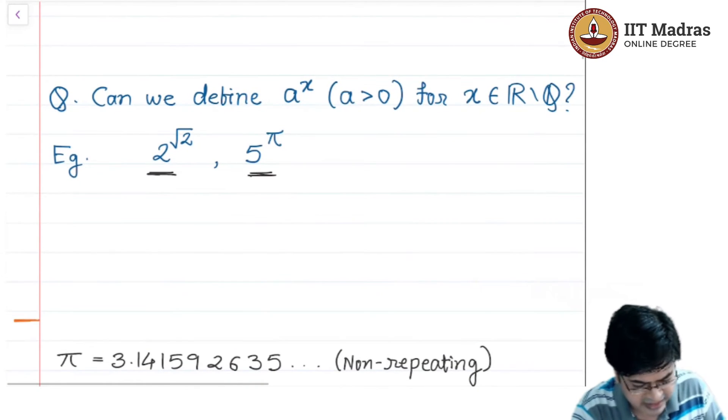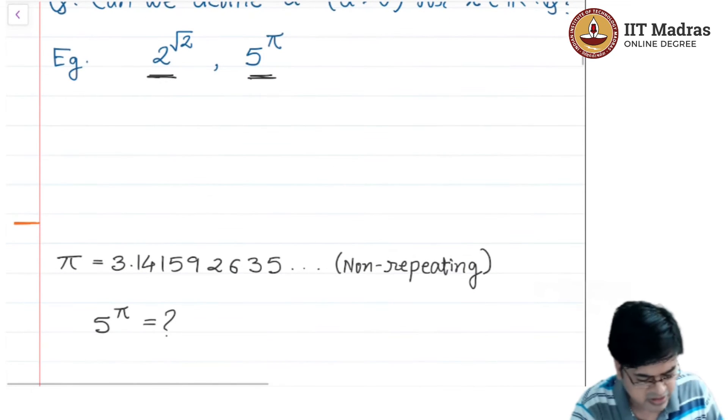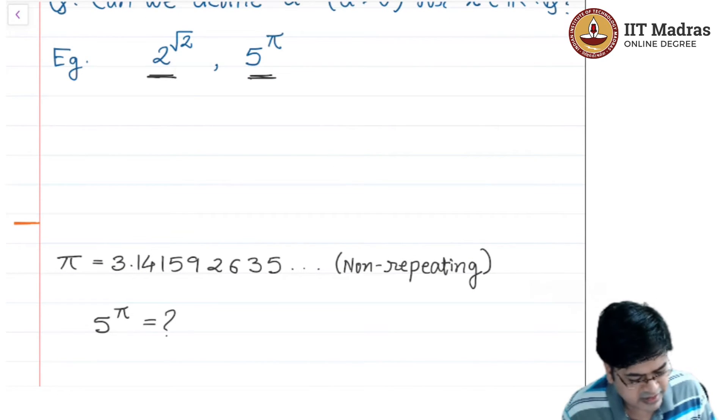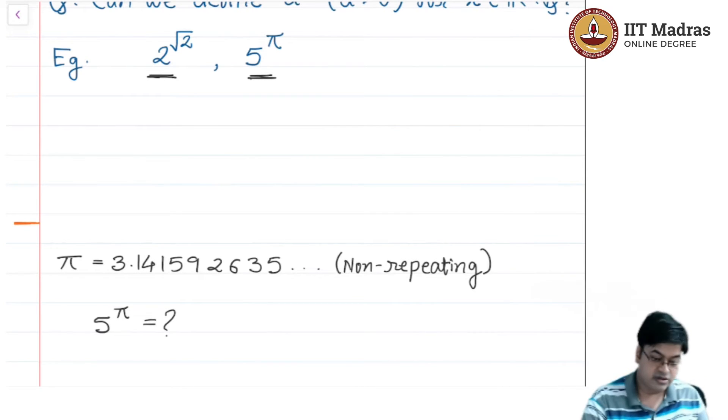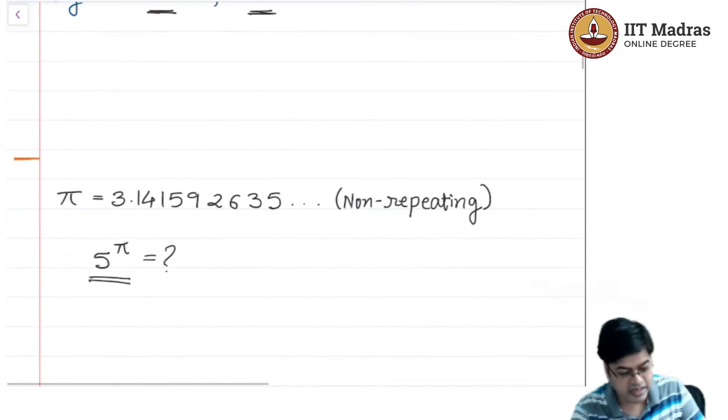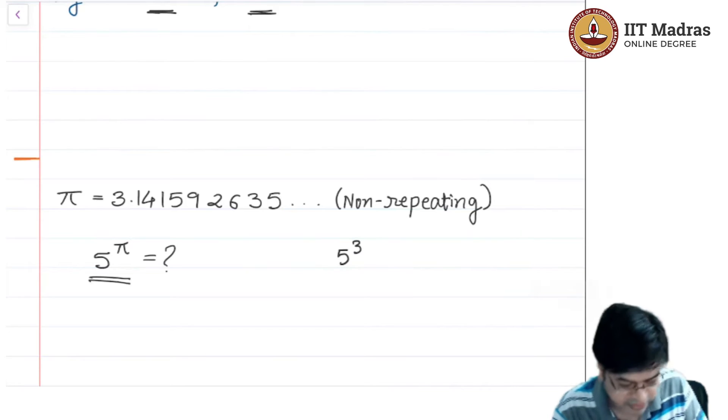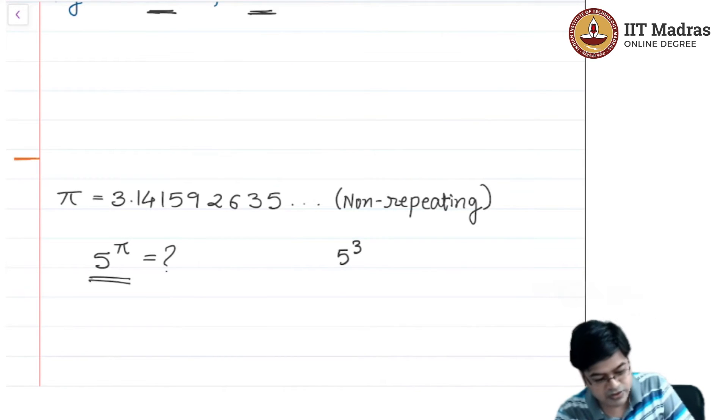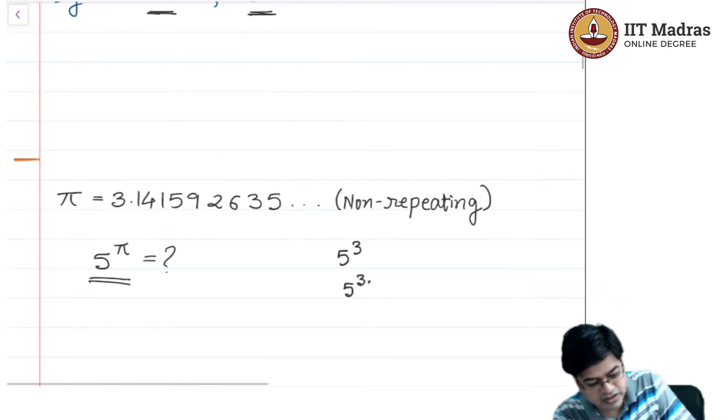Let us consider pi. The numerical approximation of pi is, we all know pi is an irrational number, 3.14159265... and this is non-repeating, it will continue till infinity. Now what I need to understand is, from what I know, can I define the number 5 raised to pi? Anyway, I cannot define it accurately right now. Based on my understanding, I am asking you: is 5 cubed defined? If so, then next question is, is 5 raised to 3.1 defined?